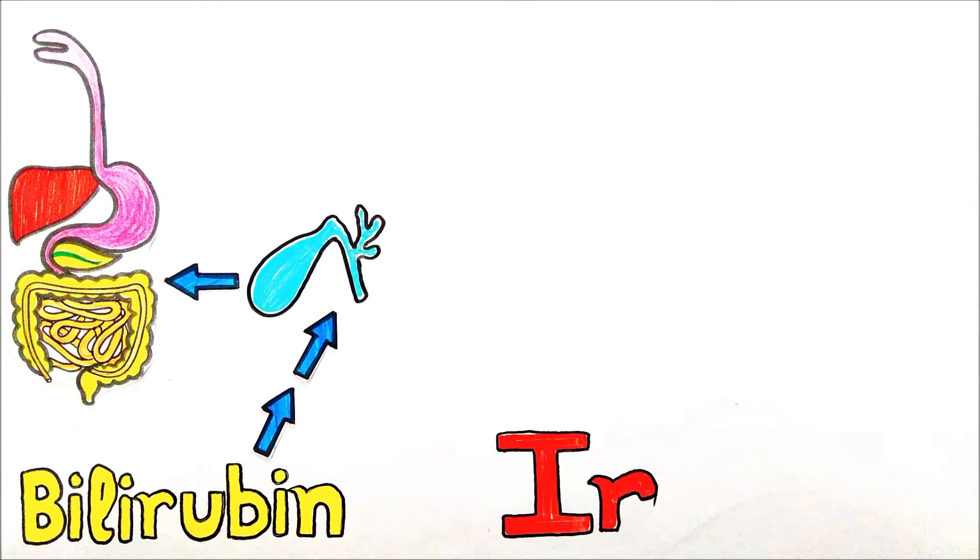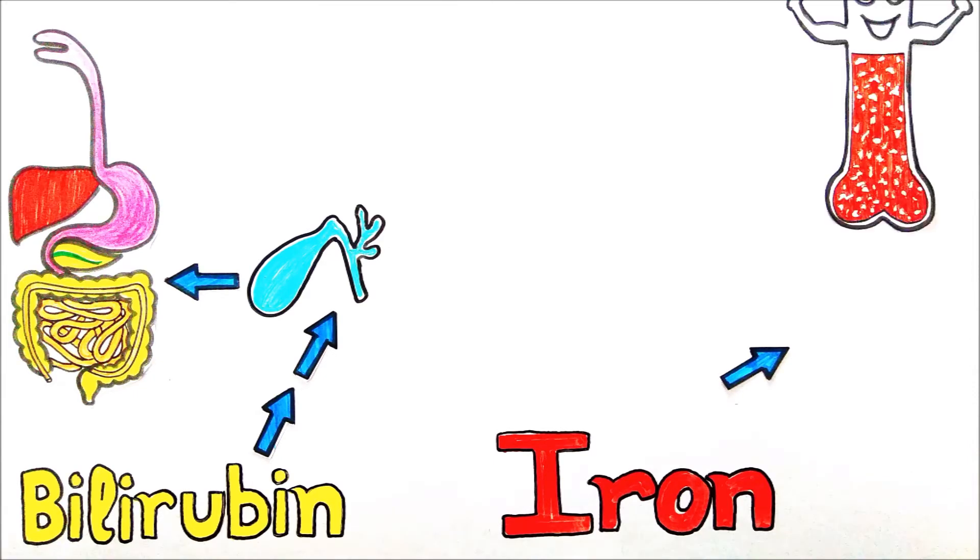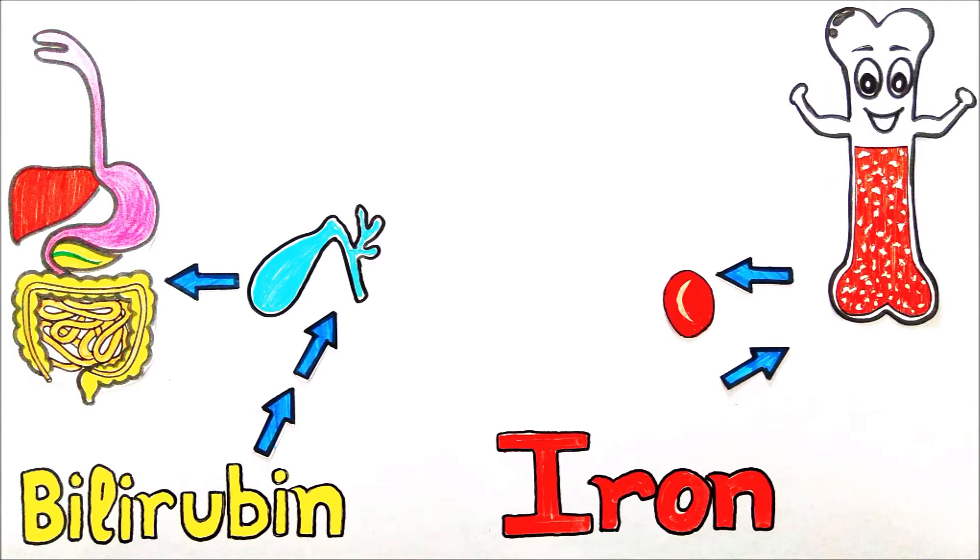Later biliverdin is converted into yellow pigment bilirubin which gets stored in gallbladder to be used in digestive process. The iron of RBC is sent back to bone marrow where it is reused in manufacturing of new cells.